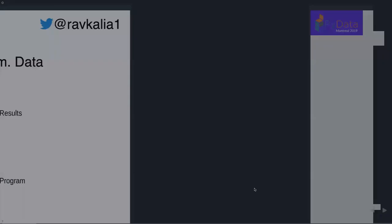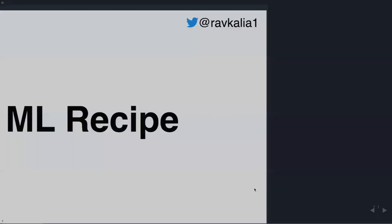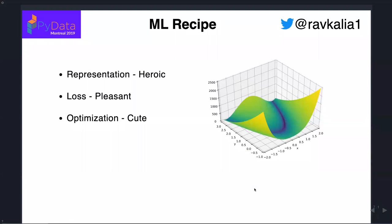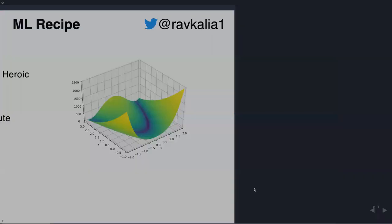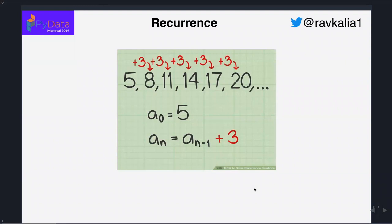A brief overview of the ML recipe. We start off with a representation — it will be heroic, because we think we have an idea of how the state is being generated. Then we'll have a loss function set up to have some nice Euclidean properties. We'll do some cute mathematics — maybe using a first-order Newtonian approximation — and say that we can solve this if we iterate enough. After doing lots of mental gymnastics, we end up with an initial condition and a recurrence relation, and we loop through that enough to get to an ML solution to generate that program.